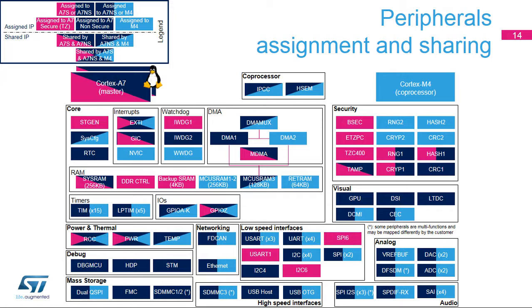Note that this diagram shows the STMicroelectronics recommendations or choices of assignment in the STM32-MP1 embedded software distribution. Additional possibilities might be described in the STM32-MP1 reference manual and may be considered later on in this distribution.